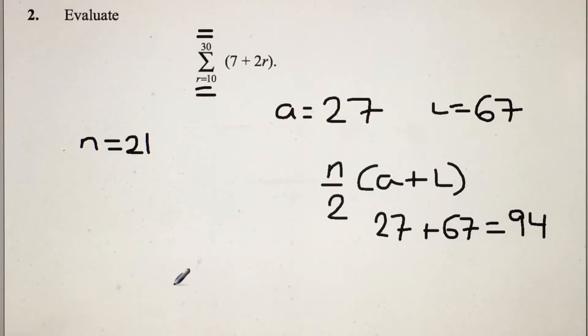All I'm going to do now is substitute all the values that we know into the equation, so 21 over 2, open bracket, 94, close bracket, and simplify it further.